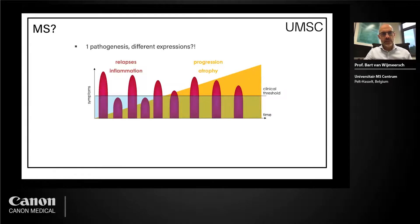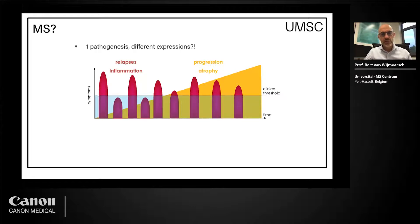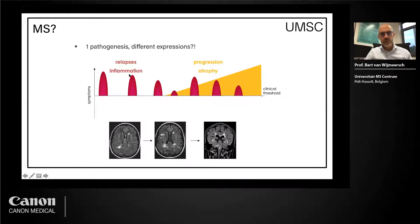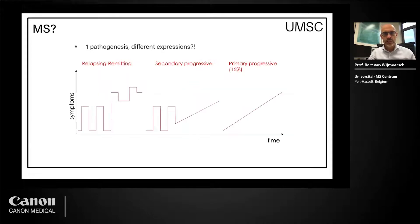Over time you can see relapses, and there is a line of clinical threshold. Some relapses and lesions inside the brain, spinal cord, or optic nerve are not felt by the patient — they remain subclinical, and you can see them on MRI. But over time there is also brain atrophy, and you lose brain volume. There's a big portion below the clinical threshold that you don't see. One pathogenesis can cause different expressions like relapsing-remitting MS.